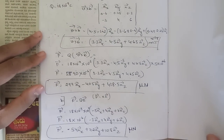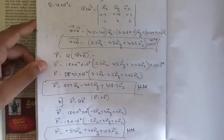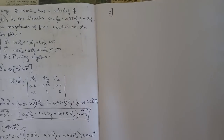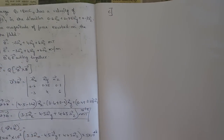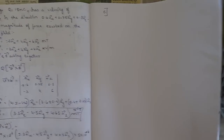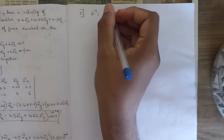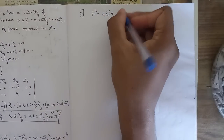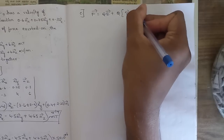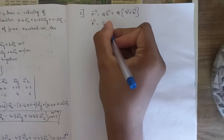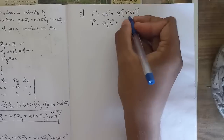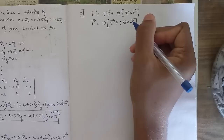Now for the third sub-question, both B and E are acting together. We need to consider the values of both E and B. We apply the total Lorentz force formula: F = q(E + v × B), where q is taken common outside.